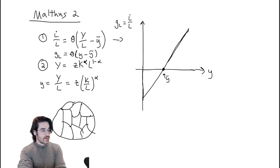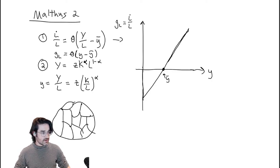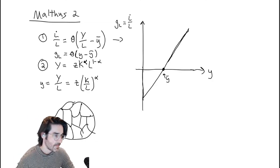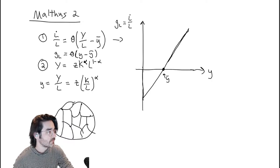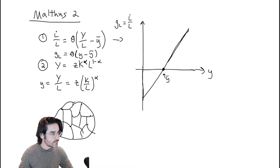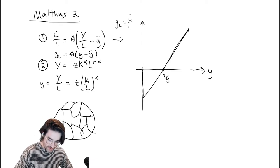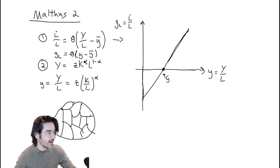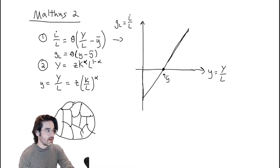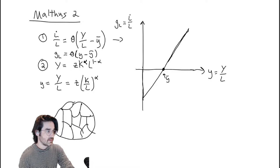From here we can just turn through the logic. Jonathan, you have a question? The x-axis here is little y — Y-over-L — and the y-axis is the growth rate of L. Does that make sense? It is kind of confusing to have Y on the x-axis.